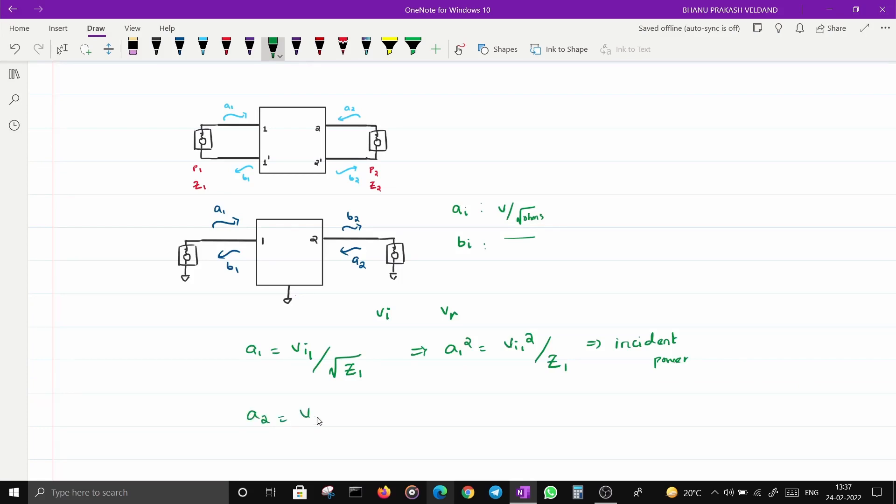If I square A2, it's V_I2^2 / Z2. That is incident power at port 2. This is at port 1, P1. This is incident power of port 2.